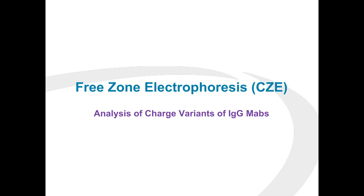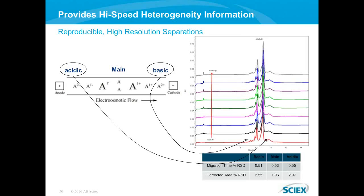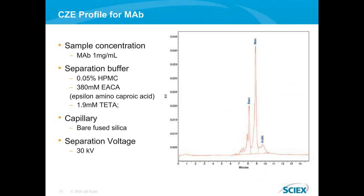We have an additional option for charge heterogeneity work: free zone electrophoresis, also known as CZE, analysis of charge variance. Within the capillary when running CZE for charge heterogeneity determination, we're taking advantage of EOF and its differing effect on acidic and basic variants to achieve the same heterogeneity profile as the first method — but in a simpler, faster, and cheaper CZE option. On the right-hand insert, you can see an overlay of multiple electropherograms achieved utilizing the CZE method, which is highly reproducible, with percent RSDs of migration time and corrected peak area shown in the bottom inset.